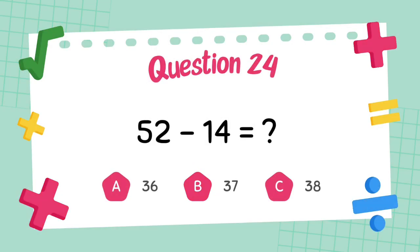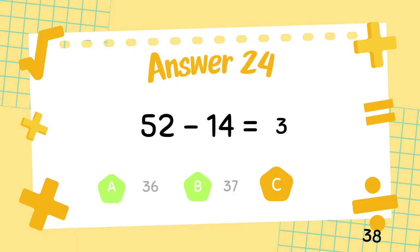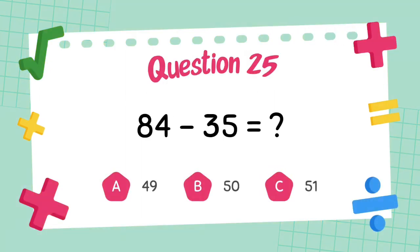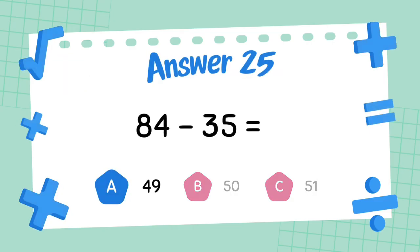What is 52 minus 14? The answer is 38. What is 84 minus 35? The answer is 49.